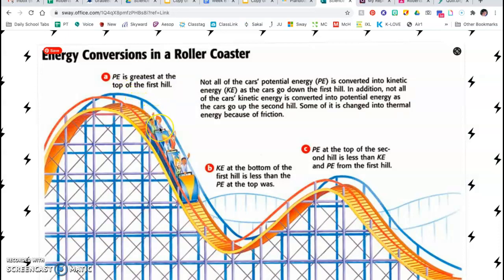Kinetic energy at the bottom of the first hill is less than the potential at the top was. And then as we continue on, the potential at the top of the second hill is less than the kinetic energy and the potential energy from the first hill. Well, why is that? Think about your hands.